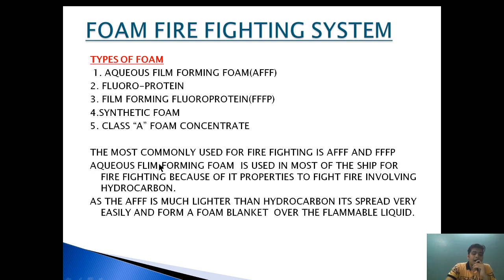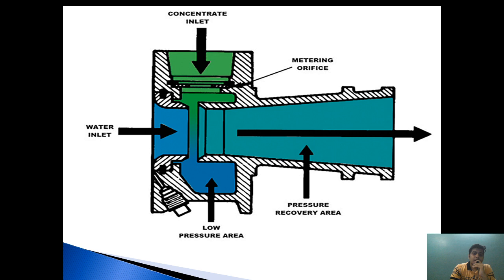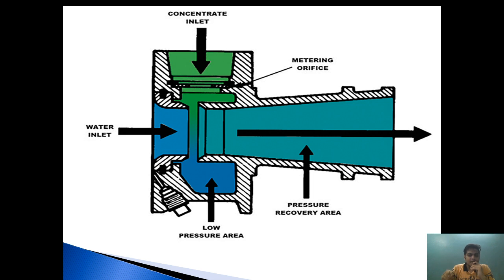As AFFF is lighter than hydrocarbon, it spreads very easily and forms a foam blanket over a flammable liquid. Additionally, foam provides two effects: a smothering effect, and because it contains some amount of water, it also provides a small cooling effect. Therefore, once the fire is extinguished by foam, there is very little chance of re-ignition — unlike the CO2 system where the fire is smothered but there is a chance of re-ignition.